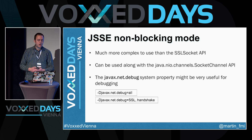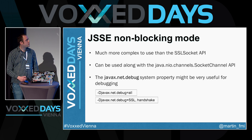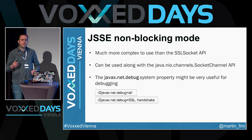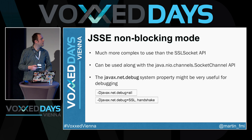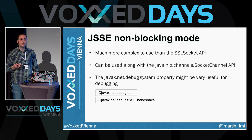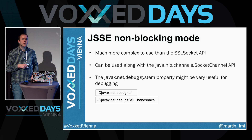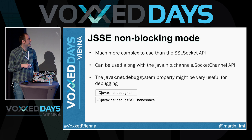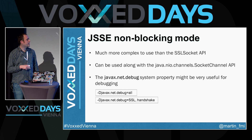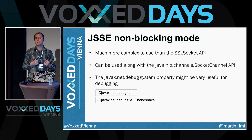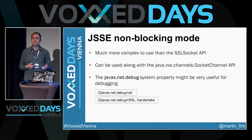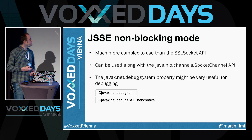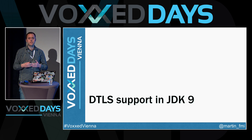The SSL Engine API is typically used with the socket channel API, which predates Java 9. Since it's complex to debug, you can enable the javax.net.debug property. Setting it to 'all' shows all information flowing through the client and server. You can make this more fine-grained — specifying 'handshake' shows only messages exchanged during the TLS handshake, while specifying 'ssl' shows only messages after the TLS connection is established.